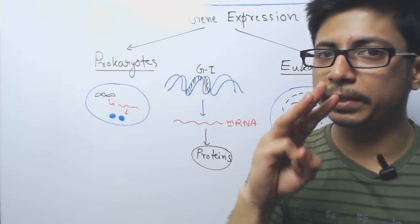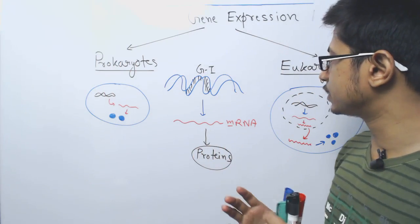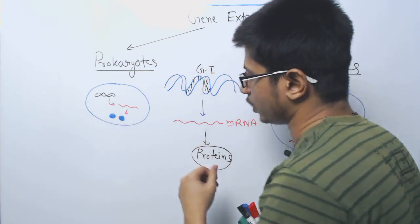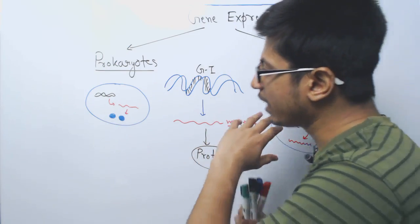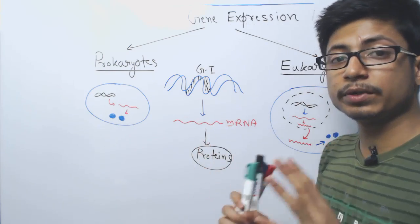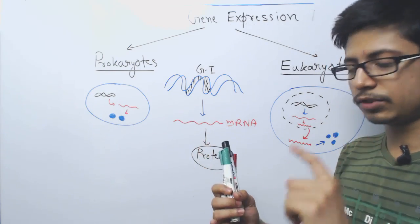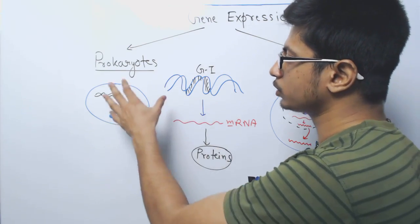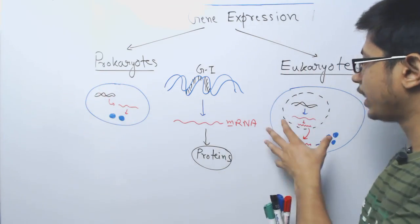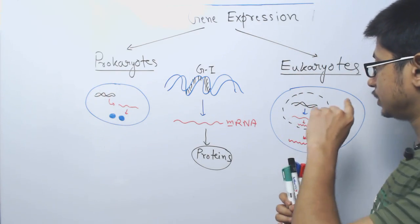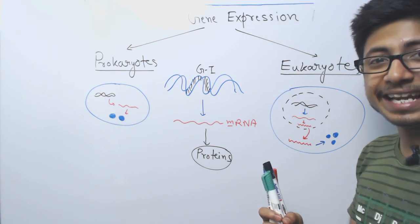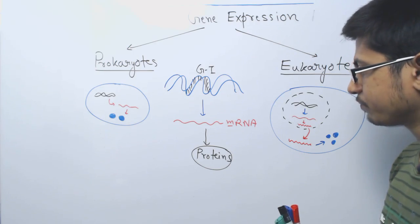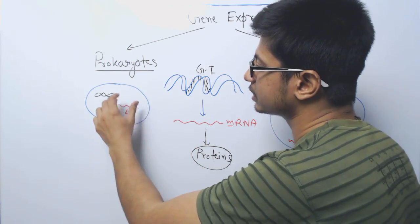There are three major differences in gene expression between prokaryotes and eukaryotes. The first difference: prokaryotes don't have a nucleus, so both transcription and translation occur in the cytosol. In eukaryotes, transcription occurs in the nucleus while translation or protein synthesis occurs in the cytosol.